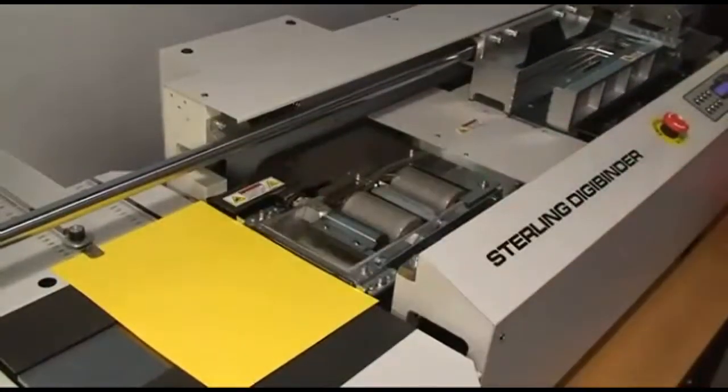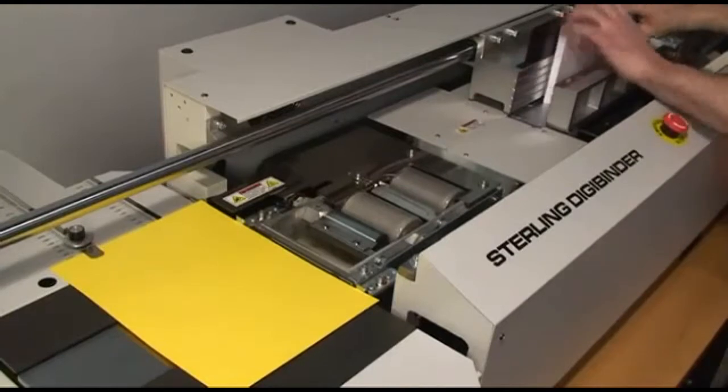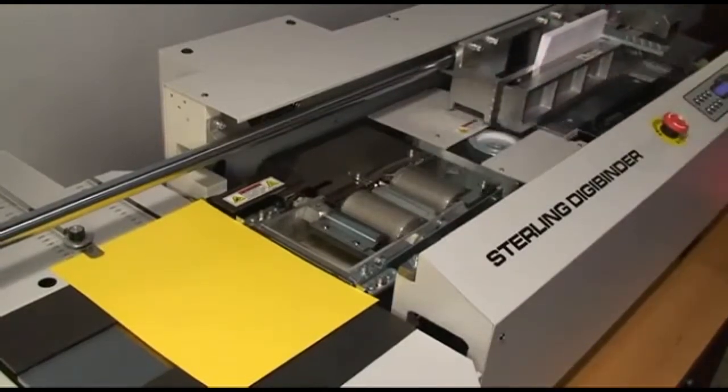Just place the cover on the nipper table, put the book block in the clamp, and push the start button. The DigiBinder does the rest.